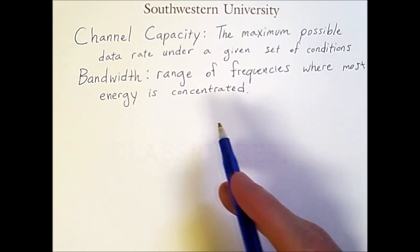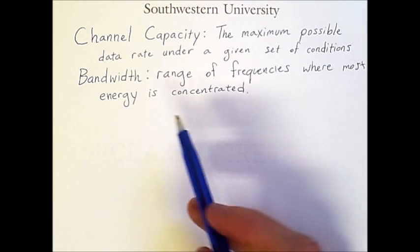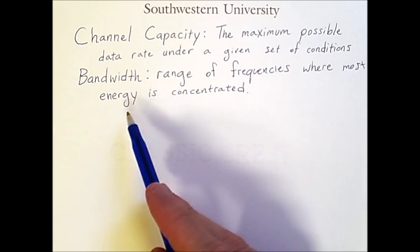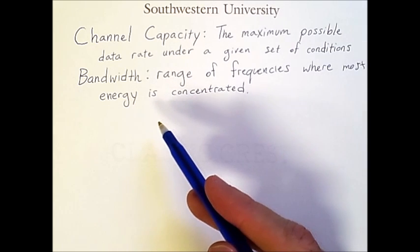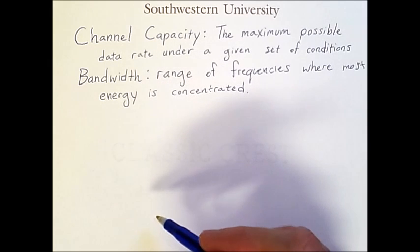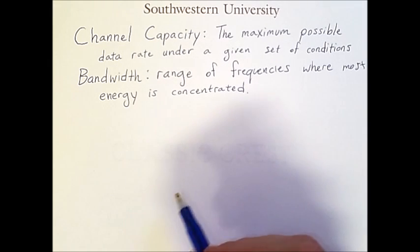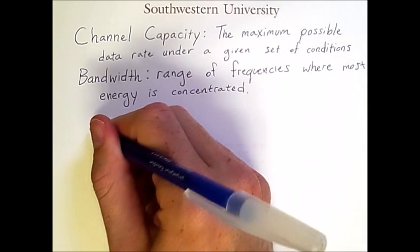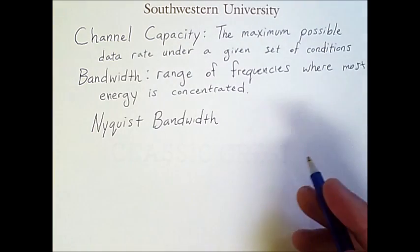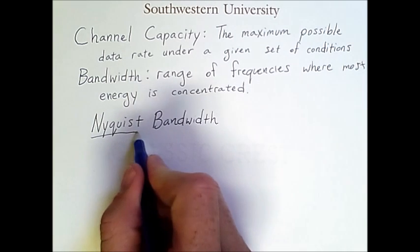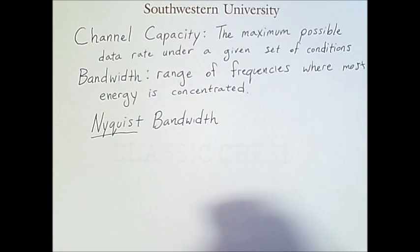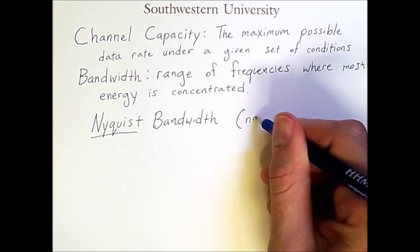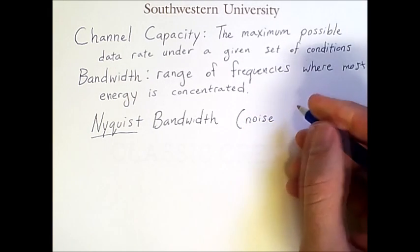Given that we have a certain bandwidth to our signal and given some other properties of our signal, there's a question of what the actual capacity is. And so there are several different formulas for this. One of them, which you need to know, is the Nyquist bandwidth formula.